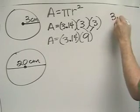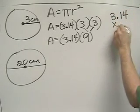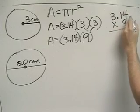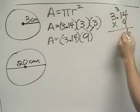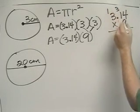So over here on scratch paper, we're going to multiply 3.14 times 9. 9 times 4 is 36. 9 times 1 is 9, plus 3 is 12, carry the 1.